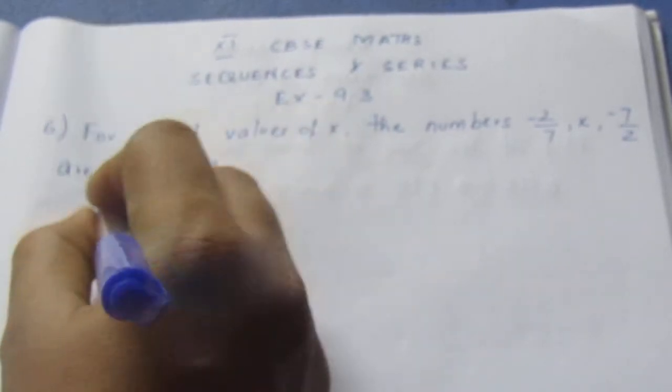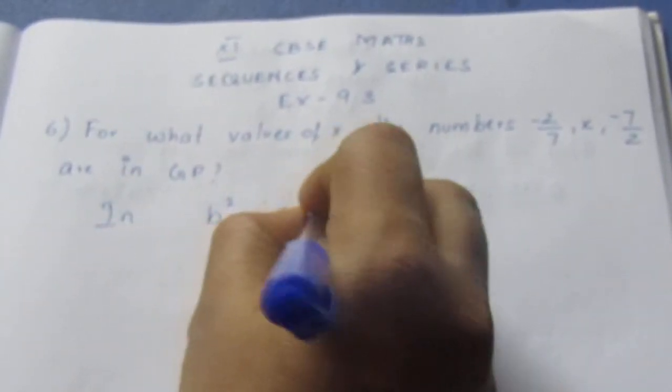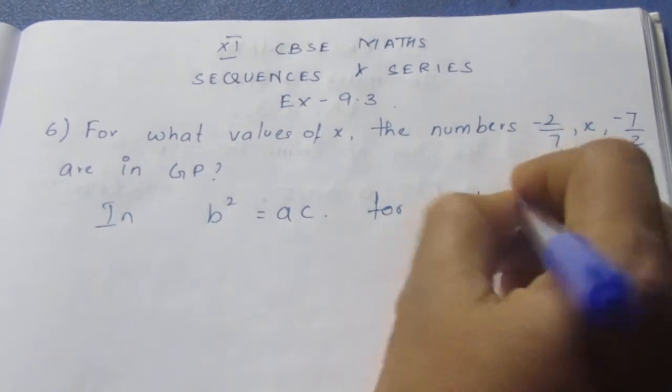Already I have given you the introduction video that if it is in GP, then b² = ac for a, b, c.